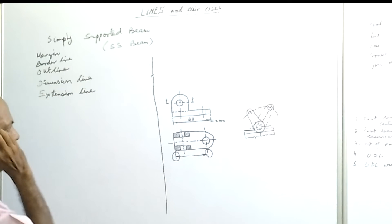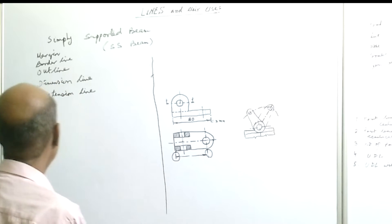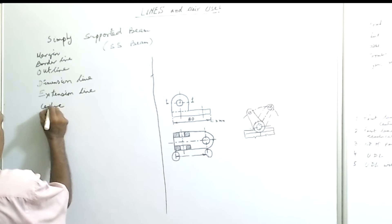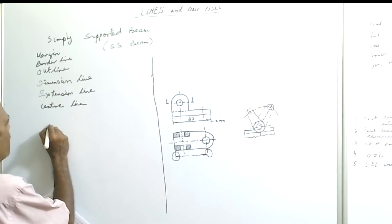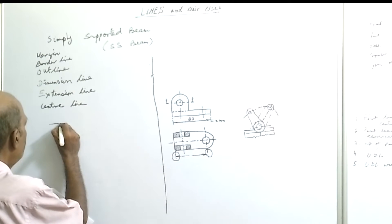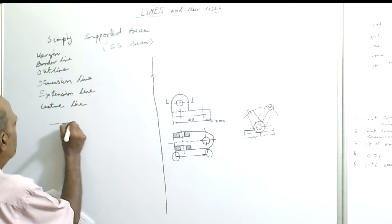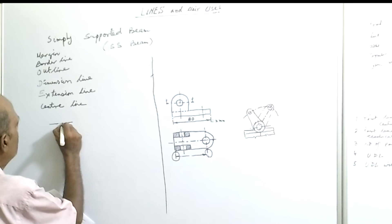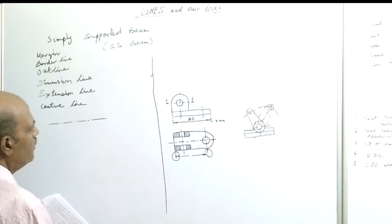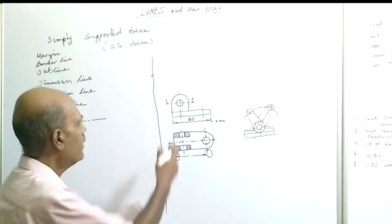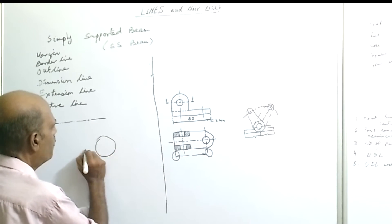Next is the center line. Center lines are thin lines drawn as follows: 3 to 4 mm line, then a dot, leaving 1 to 2 millimeters on each side. This is the center line, used to show the center of a symmetrical object.